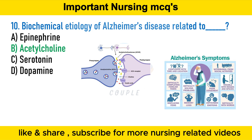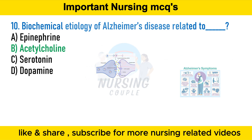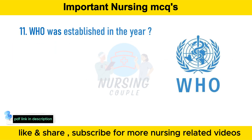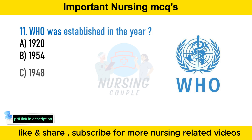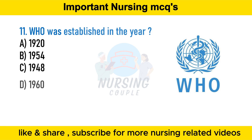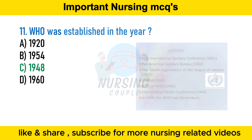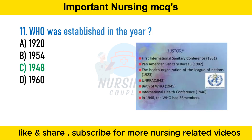WHO was established in the year: option A 1920, option B 1954, option C 1948, option D 1960. The answer is option C 1948. The World Health Organization was founded on 7 April 1948. WHO is the United Nations agency that connects nations, partners, and people to promote health, keep the world safe, and serve the vulnerable.